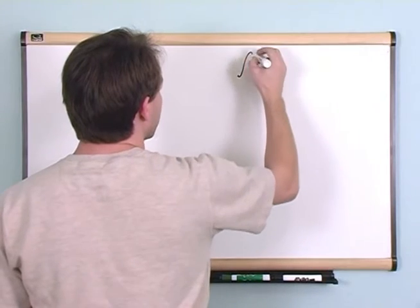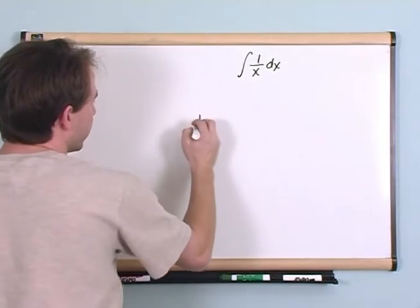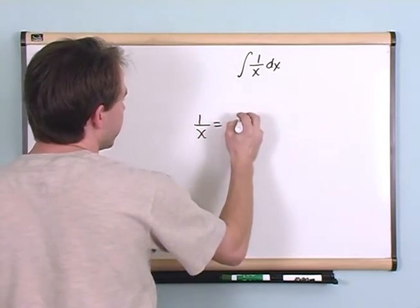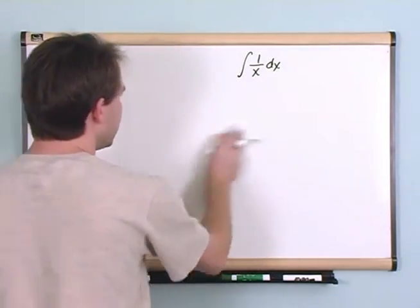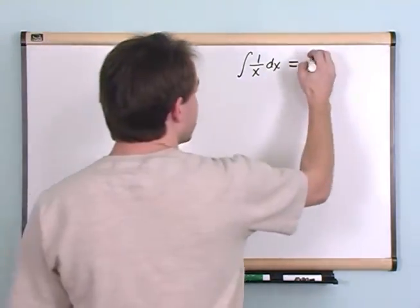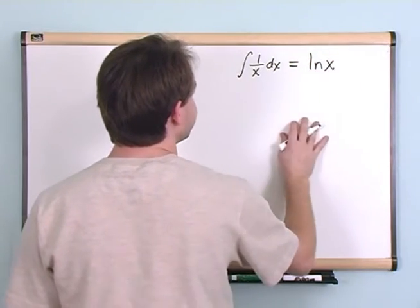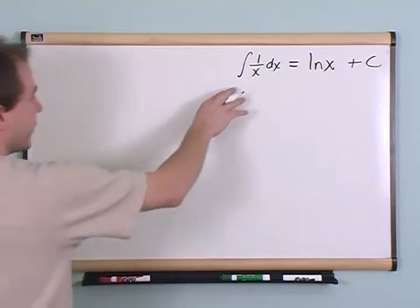The integral of 1 over x dx, and don't forget 1 over x is just simply x to the minus 1, the same problem we were just working a minute ago, is defined by definition to be the natural logarithm of x, and of course you have a constant just like you do for any integral.